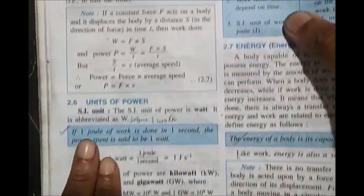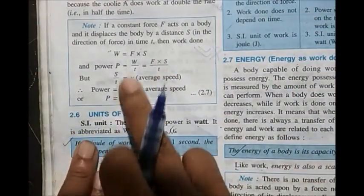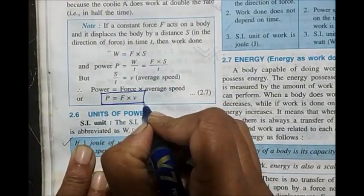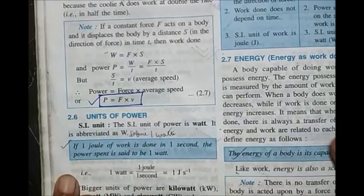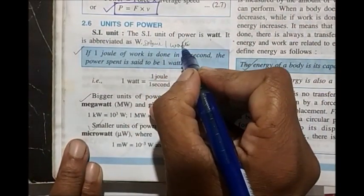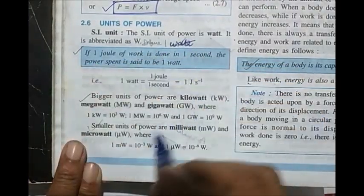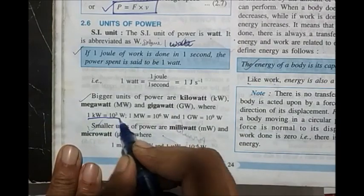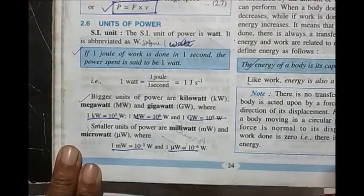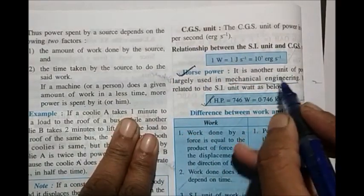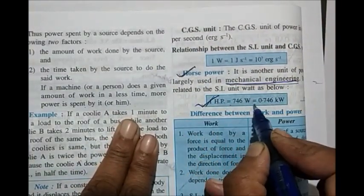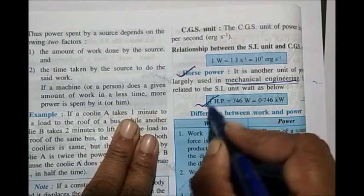Another formula for power: P = force × velocity (average speed). If a body is moving with a particular velocity, power = force × average speed. You will have numericals based on this. Then define one watt. Know the bigger units — kilowatt, megawatt, gigawatt — and smaller units — milliwatt, microwatt. Special unit: one horsepower = 746 watt, used in mechanical engineering. This conversion is important.